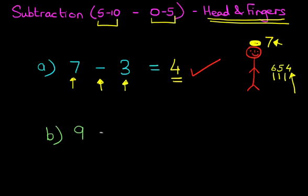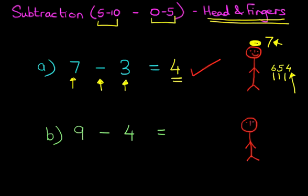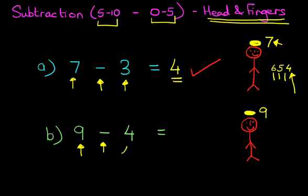This time we have 9 minus 4. Now what is 9 minus 4? You can probably do this using the head and fingers method whilst I draw my little stick figure. So you go ahead and do that and see what answer you come out with. 9 minus 4 — look at the first number, it is 9. So I'm going to say there is 9 on my head. I've got 9 on my head. Look at the sign — it is minus. So we're going to take away 4. So I want you to hold out 4 fingers: 1, 2, 3, 4. You should be holding out 4 fingers.